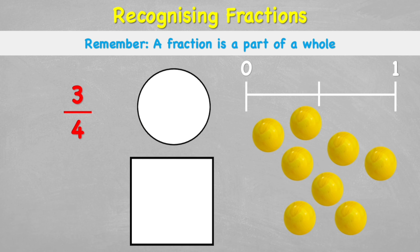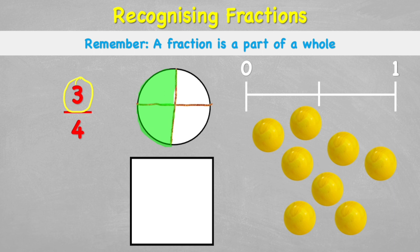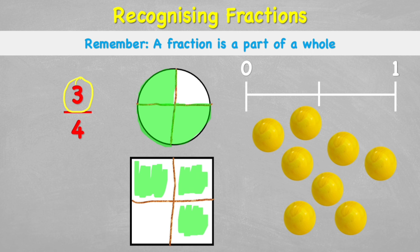This fraction has a different numerator — three — so it reads three quarters. It means I've split my whole into quarters, but instead of looking at just one quarter I need three of them. On the number line, one quarter is here, two quarters is the next section, and three quarters is the next section after that.